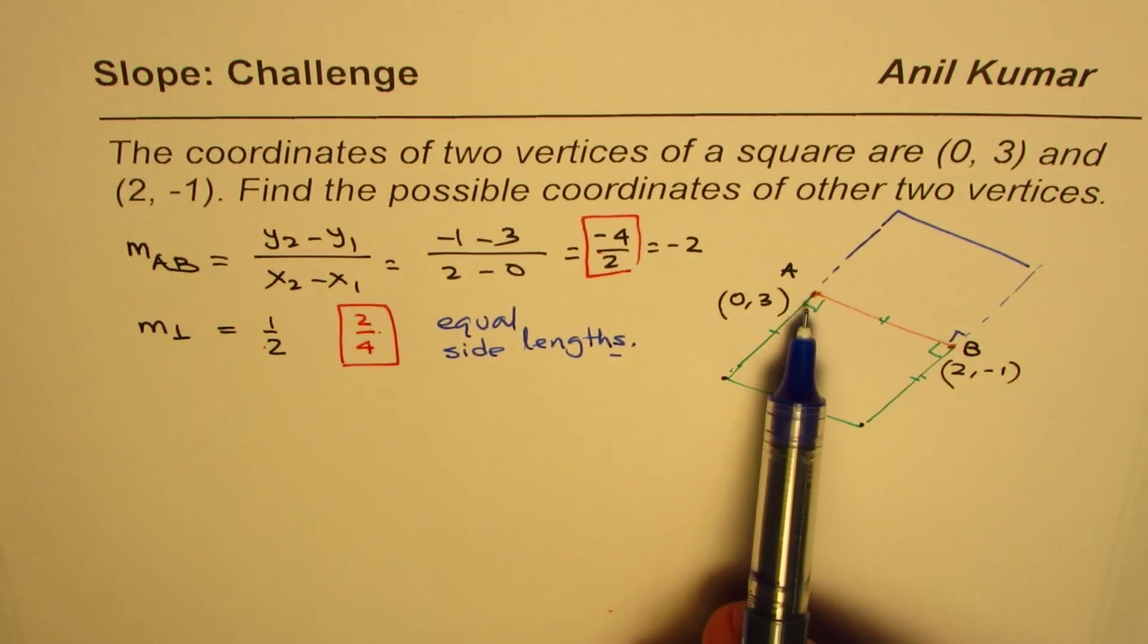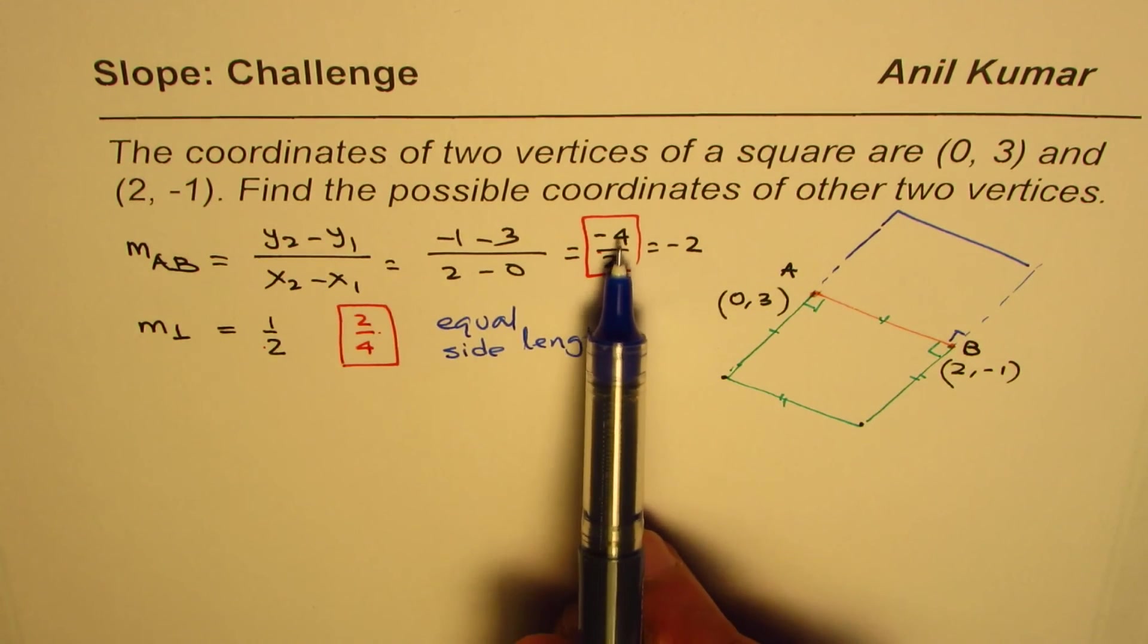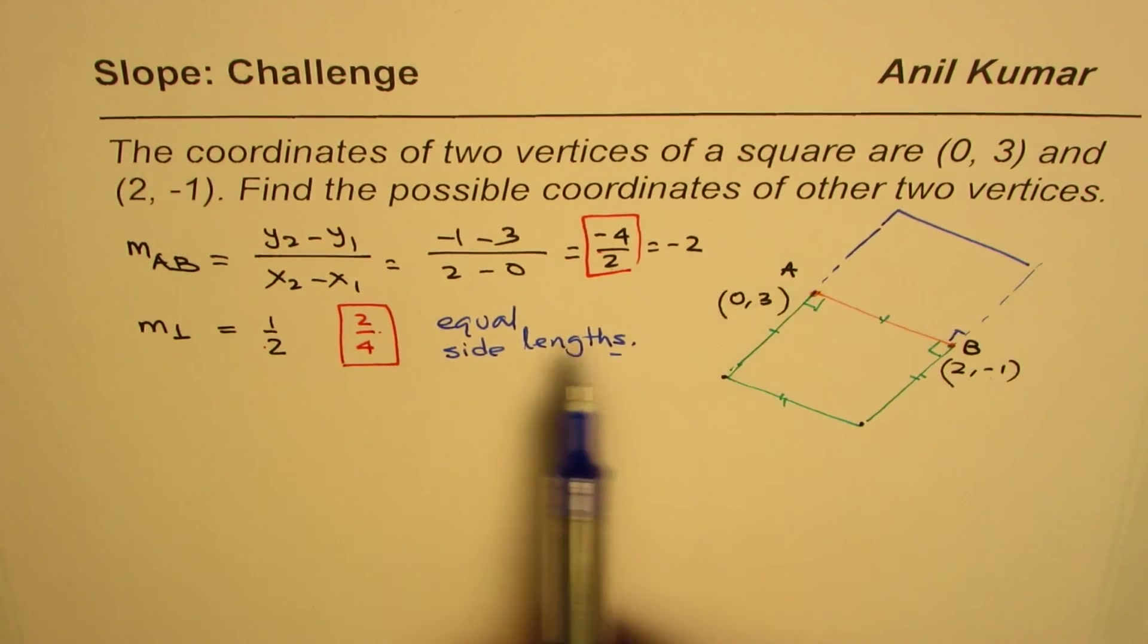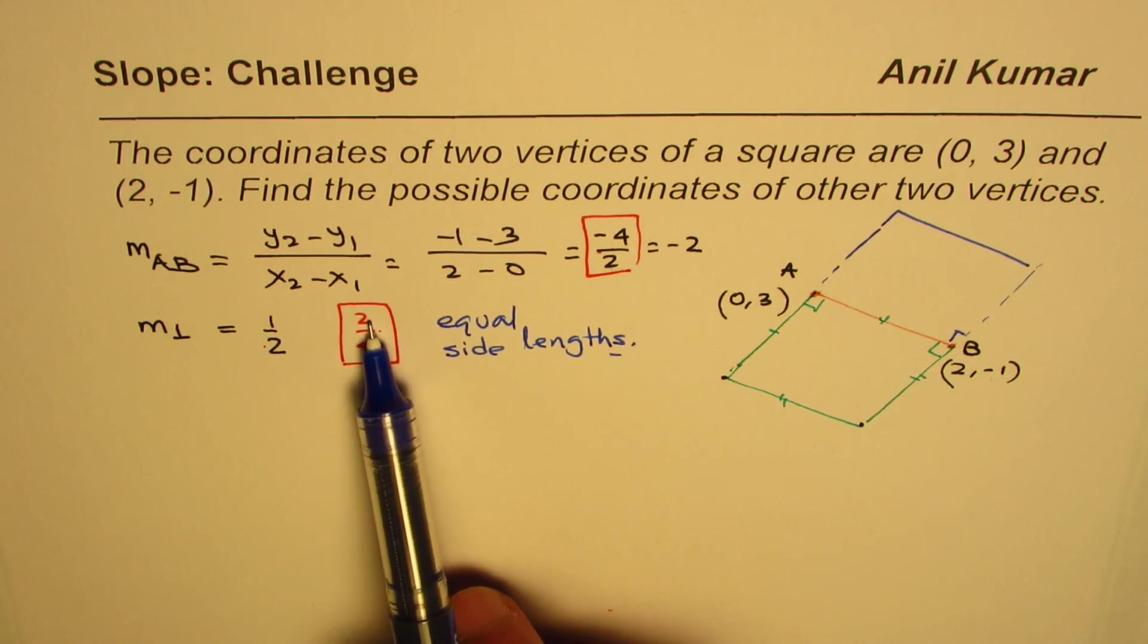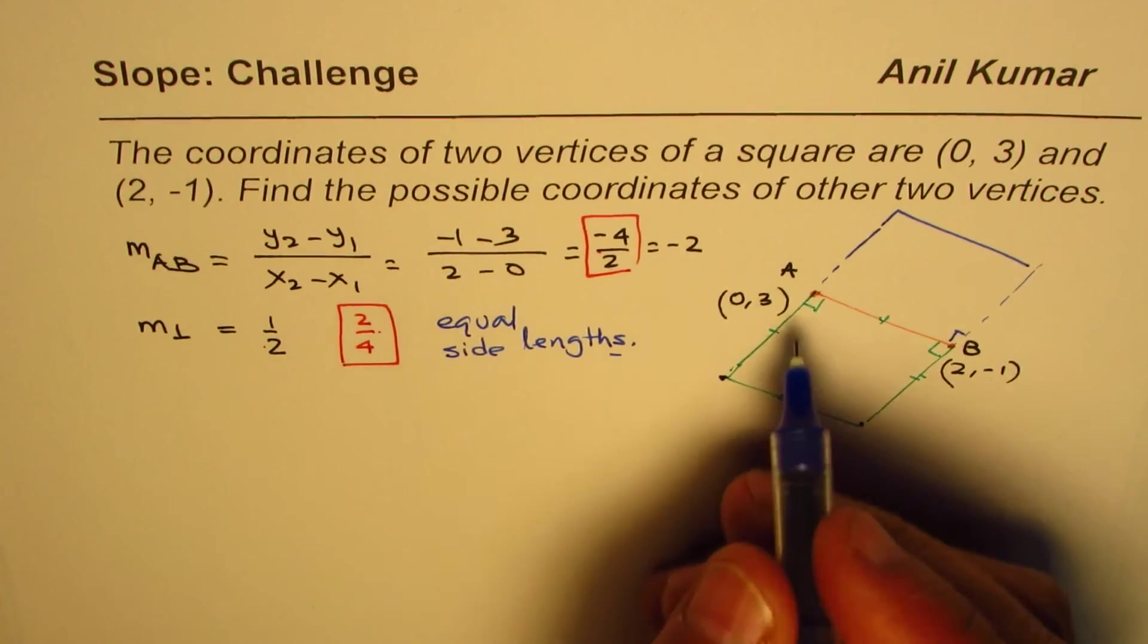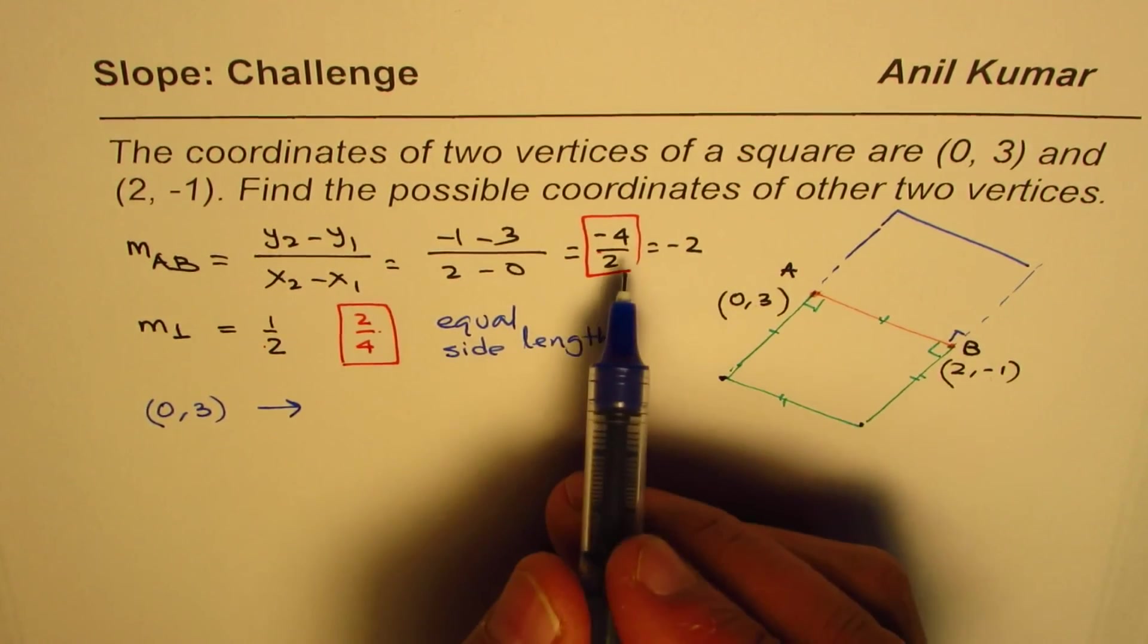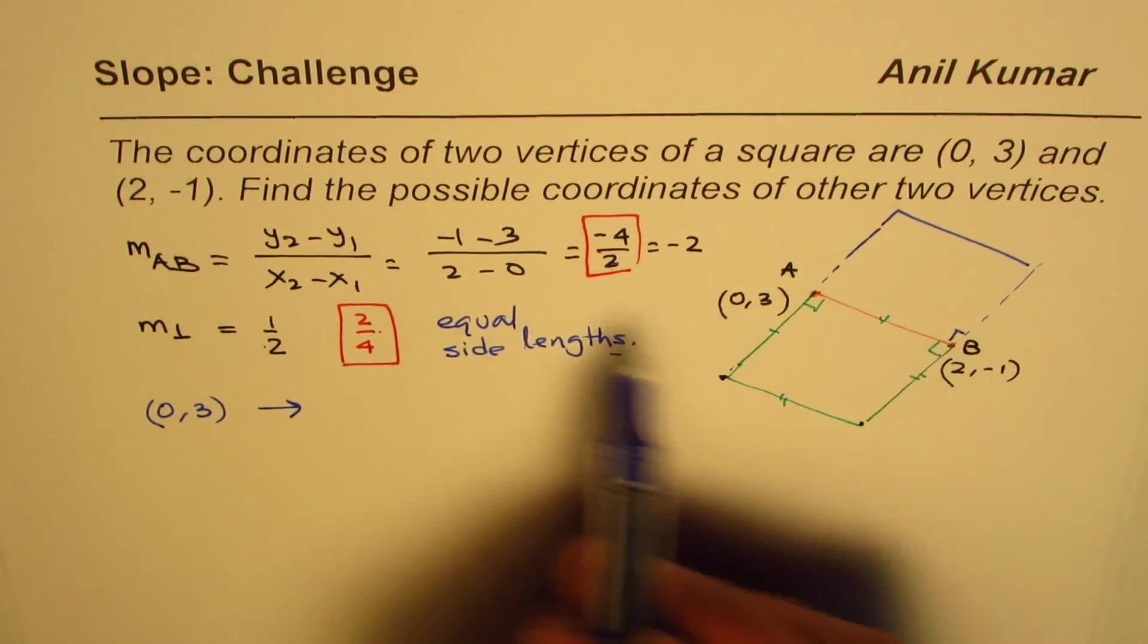This is a very important concept. If I add -4 to y and 2 to x, I get coordinate B. But if I add 4 to x and 2 to y from A, I get the other vertex. Starting from A at (0, 3), instead of going 2 right and 4 down to reach B, we go 4 right and 2 up.